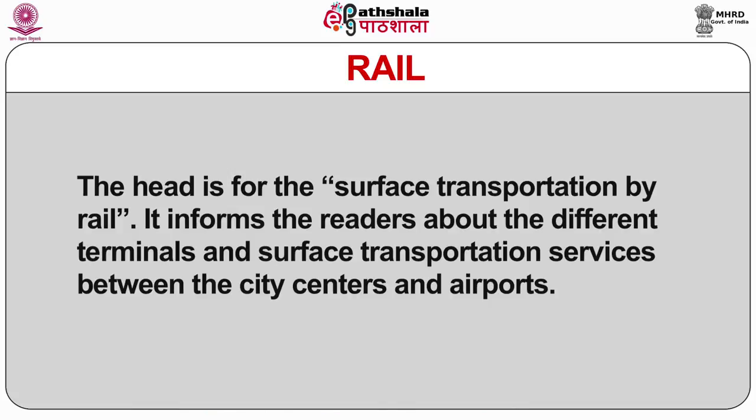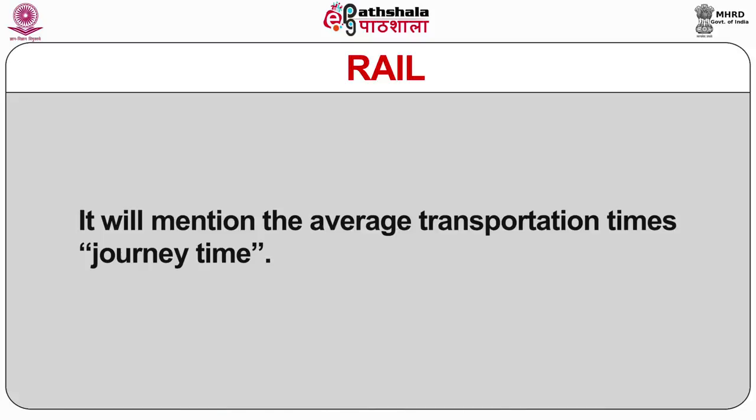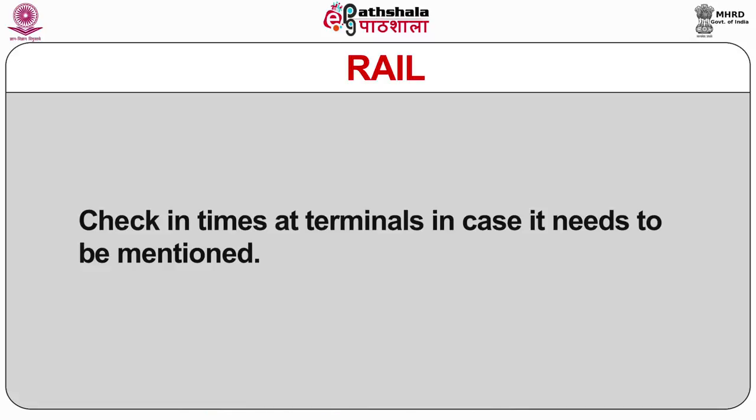The next head covers surface transportation by Rail, informing readers about different terminals and surface transportation services between city centers and airports, including average journey times. For example, Chicago (CHI) has subway/elevated train services from downtown with a journey time of 35 minutes. The Bus section covers surface transportation by bus — for example, Greyhound Airport Express services are available from the cities mentioned.